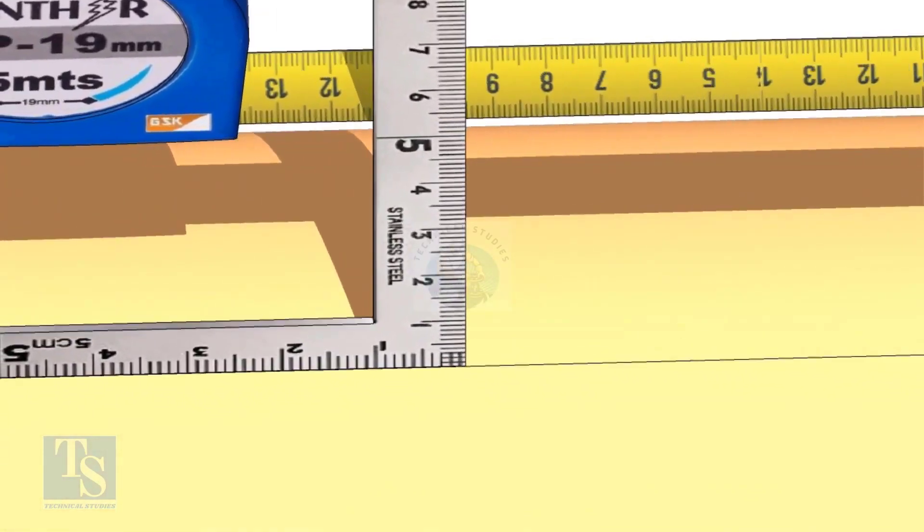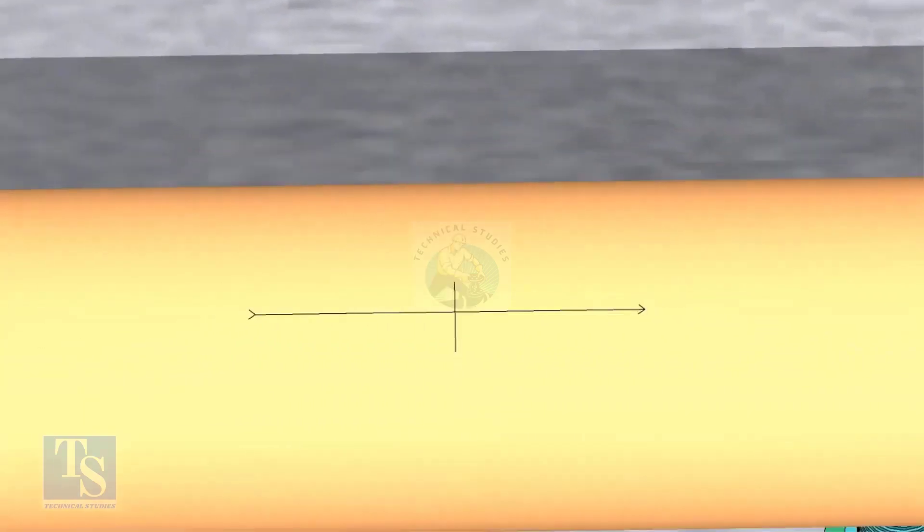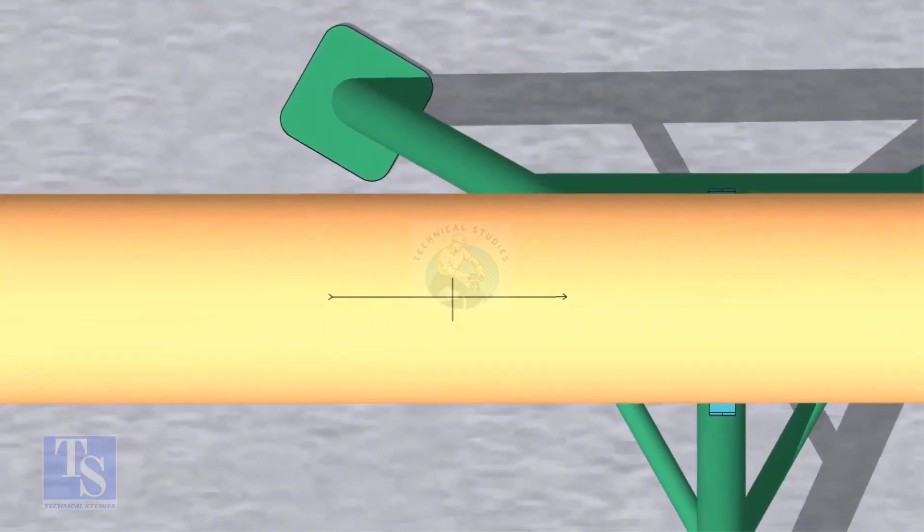Mark on the pipe where the right angle edge touches. This is the center of the OLED. Punch mark the center.